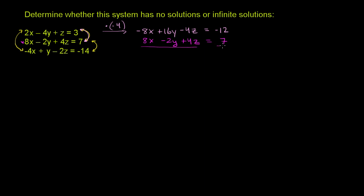Now I can add both equations. On the left-hand side, these guys cancel out. 16y minus 2y, and that was the whole point behind multiplying by negative 4. 16y minus 2y is 14y. Negative 4z plus 4z, these guys actually cancel out as well.